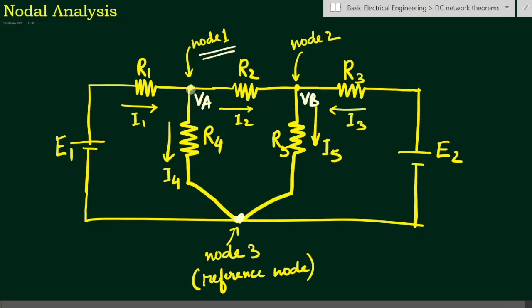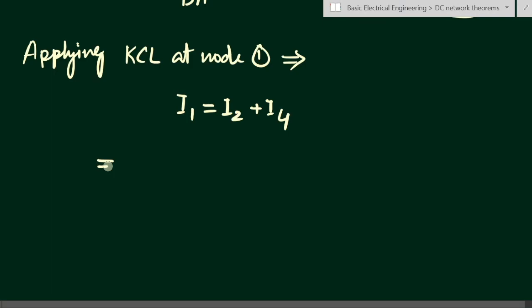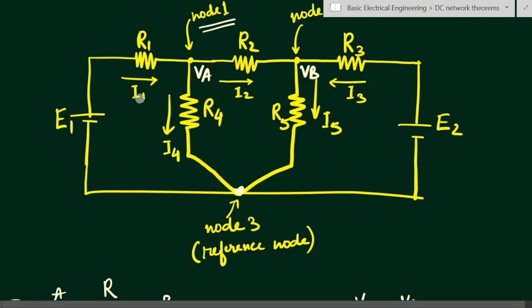Now let us write this in terms of V/R using Ohm's law. Current I1 flows through R1 with EMF source E1. Since the current passes from negative to positive through E1, we get a gain, so: I1 = (E1 - Va) / R1. The voltage source E1 is assumed to have no internal resistance.